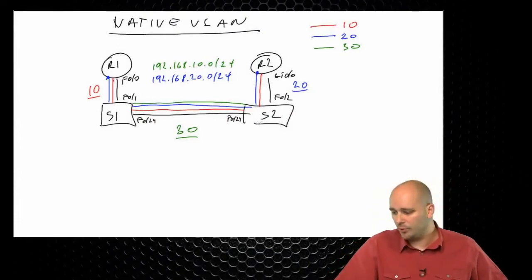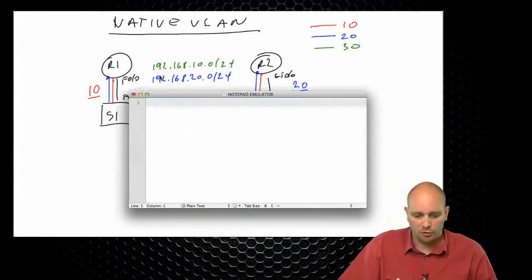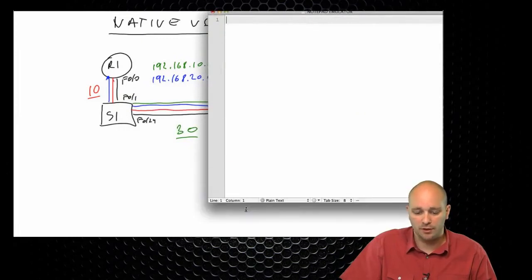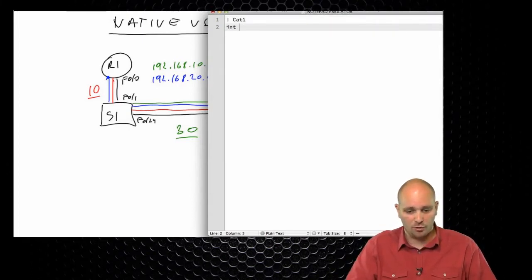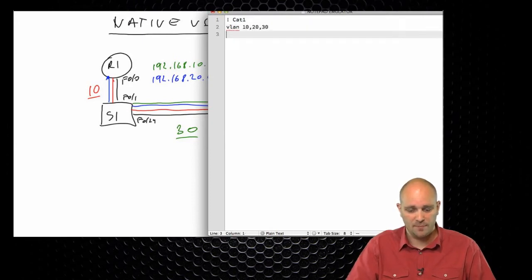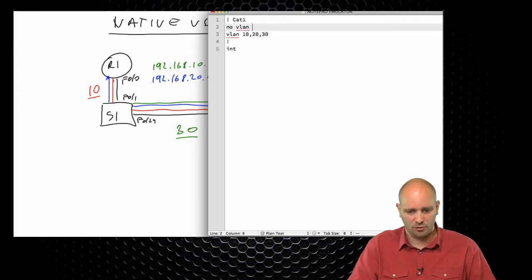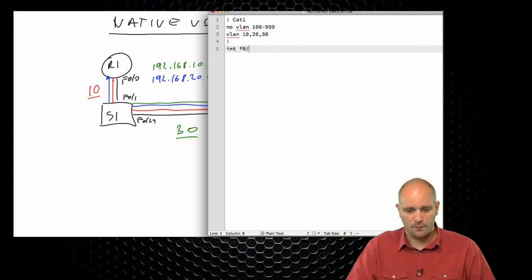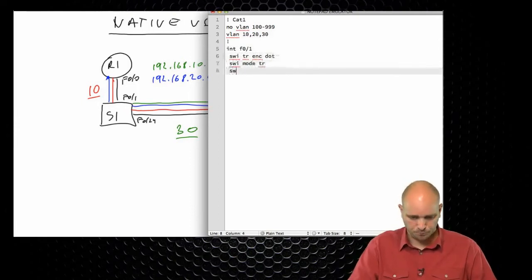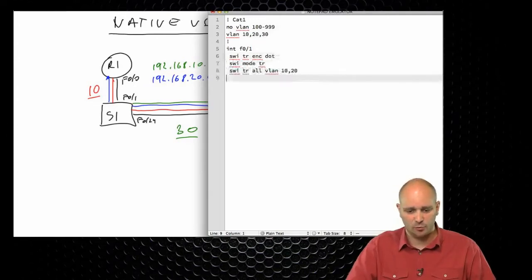I'm going to bring my Notepad and start configuring. First, for cat1, let's create VLANs 10, 20, and 30, then delete any other VLANs we don't need. Interface FastEthernet 0/1 needs switch port trunk encapsulation dot1q, switch port mode trunk, switch port trunk allowed VLANs 10 and 20, and switch port trunk native VLAN 10. This will be the configuration facing R1.